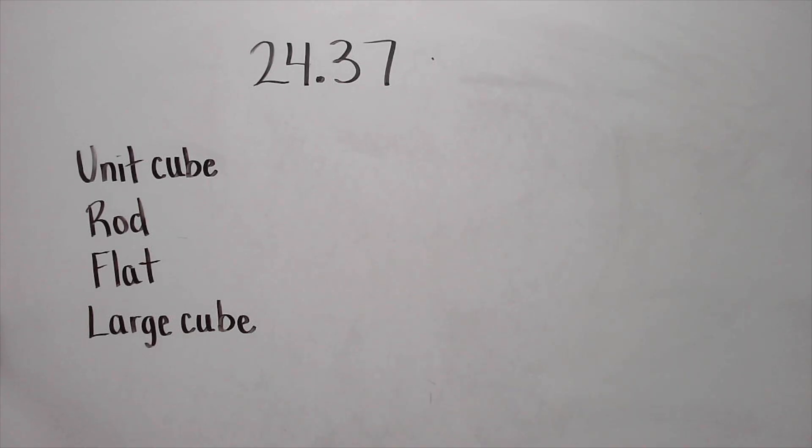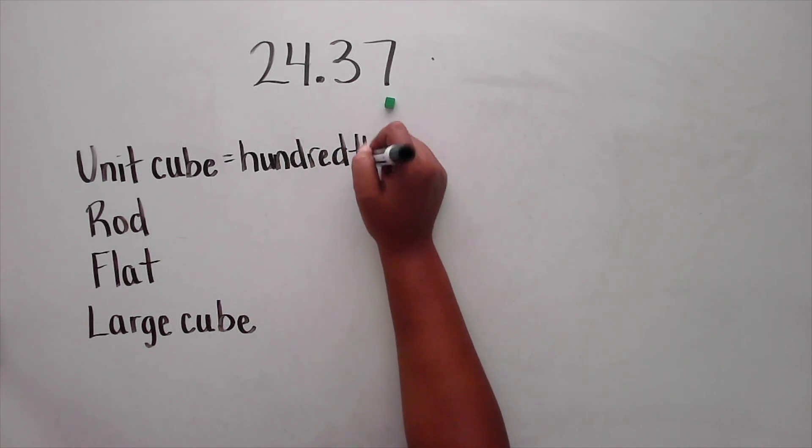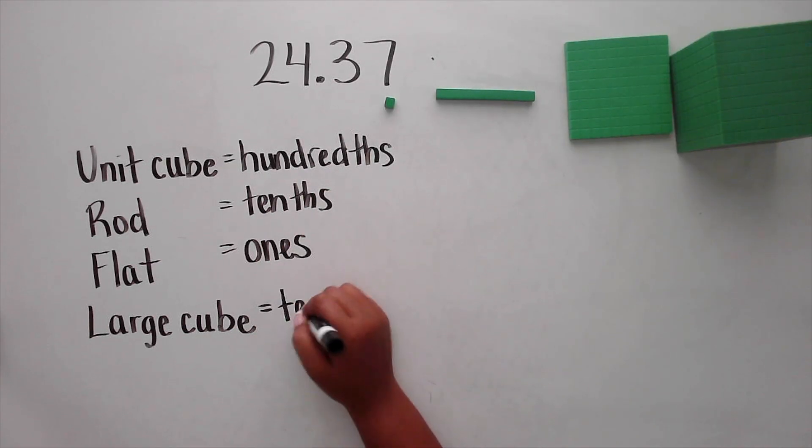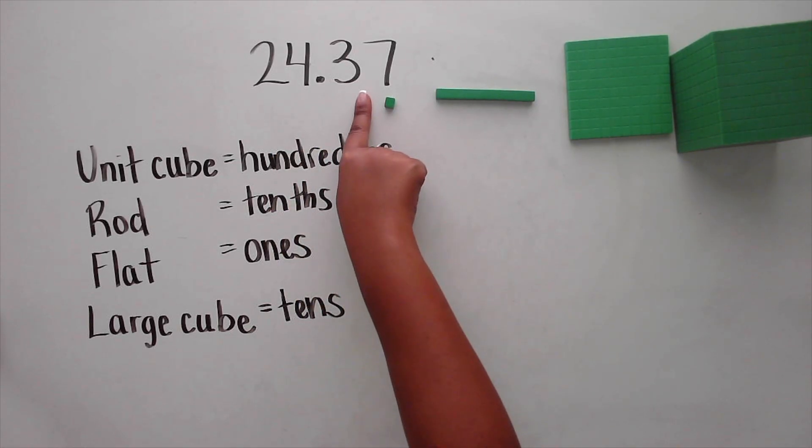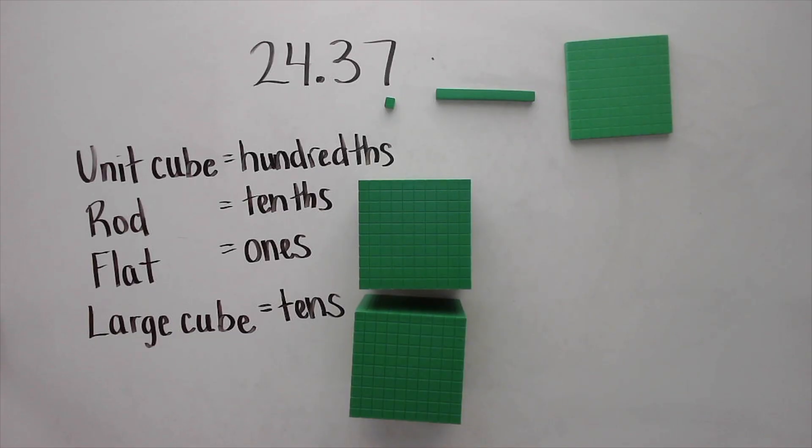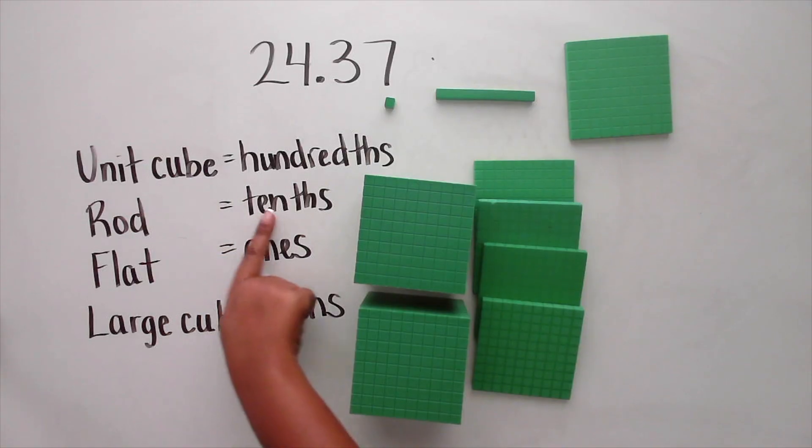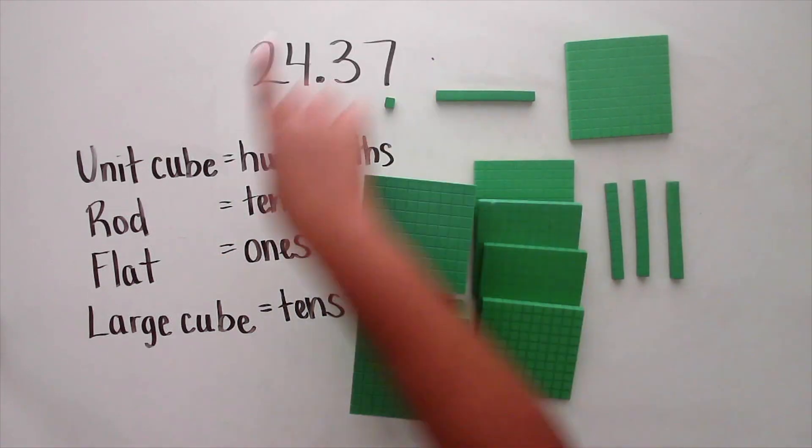In example 2, 24 and 37 hundredths, the last digit is in the hundredths place. So this time, we'll let the unit cube represent hundredths. That makes the unit cube representing hundredths, rod represents the tenths, flat represents ones, and the large cube can represent tens. 24 and 37 hundredths has 2 tens, 4 ones, 3 tenths, and 7 hundredths.